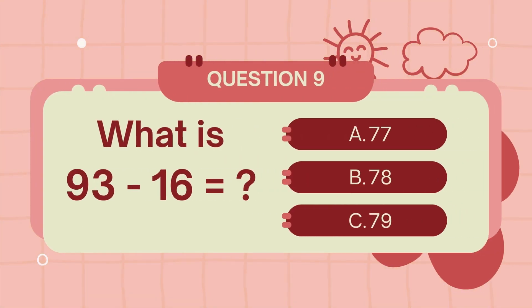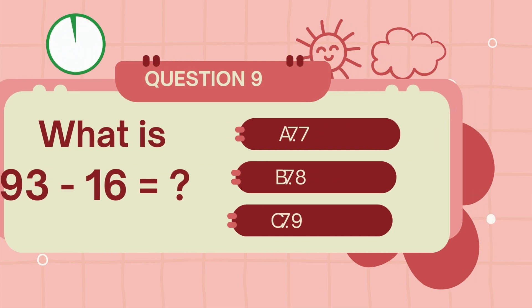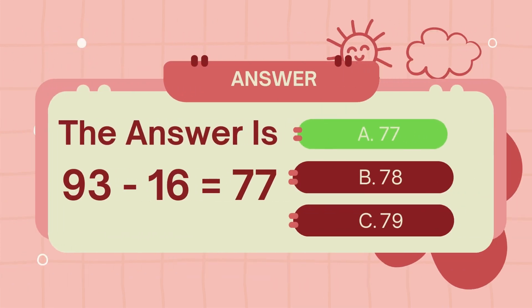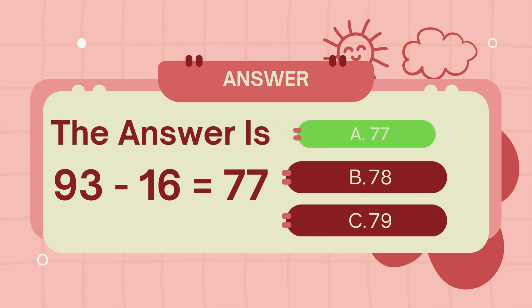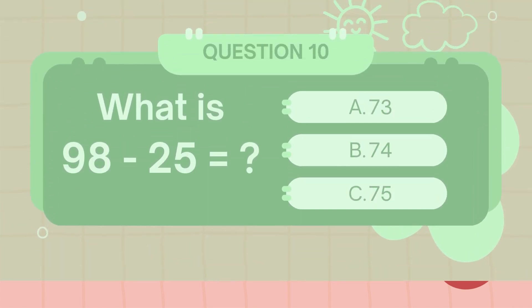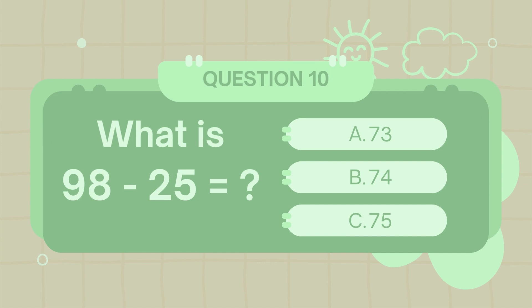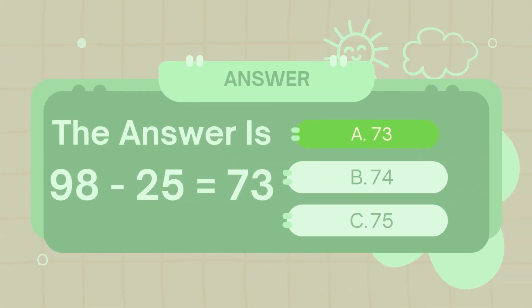What is 93 minus 16? The answer is 77. What is 98 minus 25? The answer is 73.